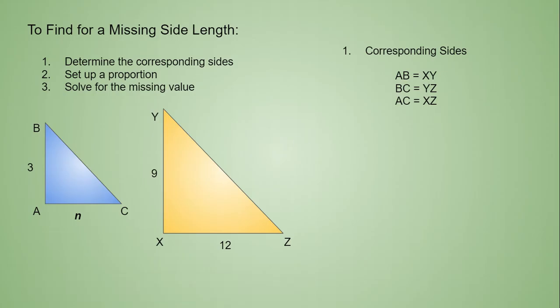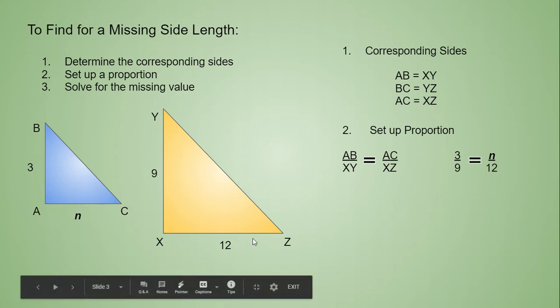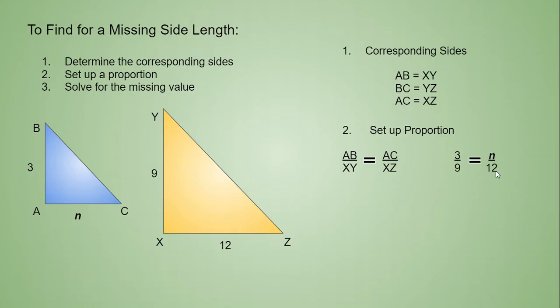Now we're going to be able to set up our proportion to solve for the value N. And so to do that, we have to take the two sides that have a number, AB and XY, and use that ratio, AB over XY, 3 over 9. And then we've got to use the ones that we're looking for. So we're looking for AC, which is our value N. And that one corresponds with XZ, which is value 12. So we set it up the same way, N over 12.